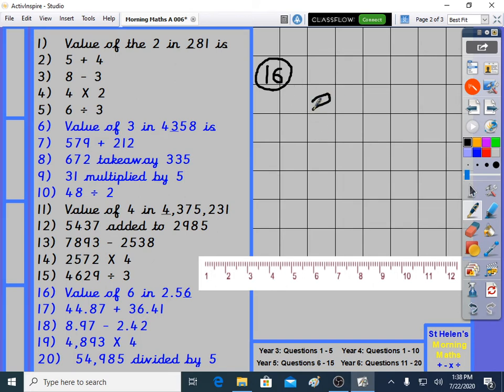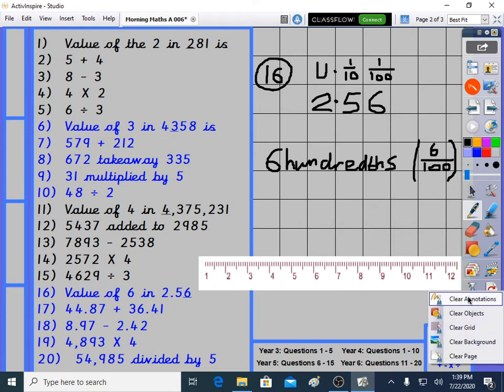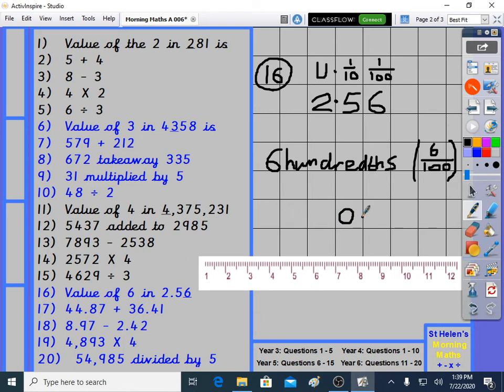Let's go to year 6. Question 16, the value of the 6 in 2.56. So what column is the 6 in, basically? I line up the decimals. The units comes before the decimal point. 5 is in the 10th column. 6 is in the 100th column. What's the value of the 6? It's 6 hundredths. So 6 hundredths. In brackets, 6 hundredths. And by the way, decimal. It might say the decimal on the answer page is 0.06. Because the 6 is in this column. 0.06.